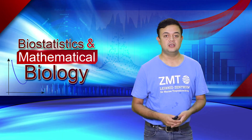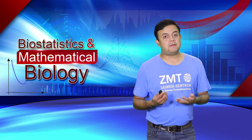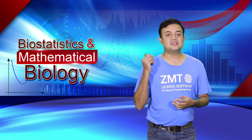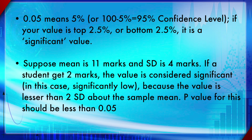The threshold p-value, alpha, and significance level are all synonyms. You must define a significance level before doing an experiment, ideally considering the consequences of false positives or false negatives. In practice, in most fields — especially biology — alpha is set at 0.05. This corresponds to a 95% confidence level. A 0.05 probability equals 5%, and 100 minus 5 is 95, so both represent the same thing.